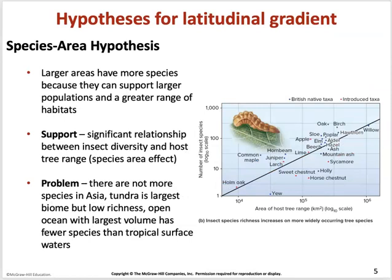Another hypothesis for the latitudinal gradient is that larger areas support more species because they can sustain larger populations. There is a significant relationship between the number of host trees and insect diversity — the bigger the area, the more insect species it hosts. However, Asia is not the most species-rich despite being large, and the tundra is the largest biome but has the lowest richness. The open ocean has the largest volume but fewer species than tropical surface waters.